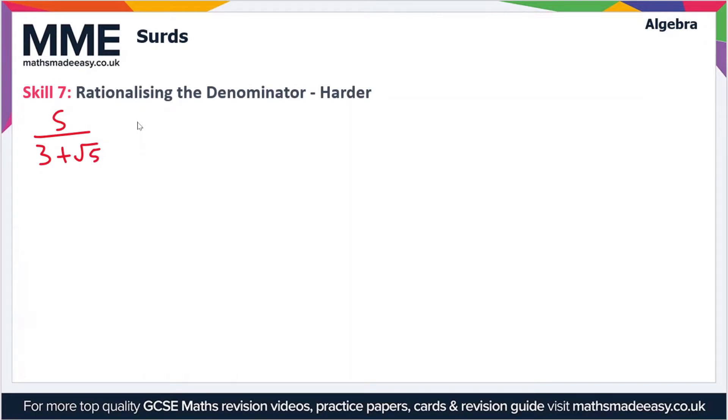So to rationalise the denominator here, we need to multiply this by a fraction. And that fraction is going to be 3 minus root 5 over 3 minus root 5. So it's the same as the denominator that we have to begin with. But the sign is flipped. Now it's not immediately obvious why we do this. But let's just follow the process out and multiply these fractions together.